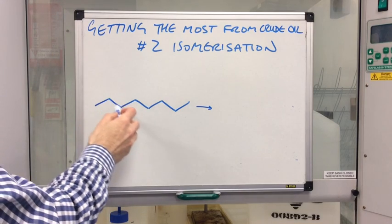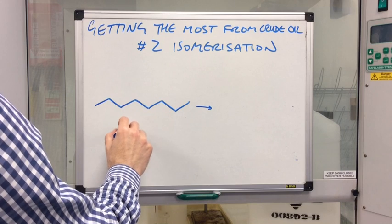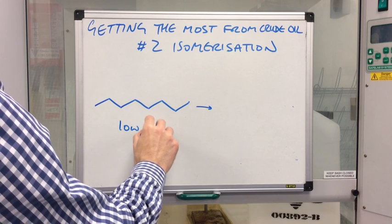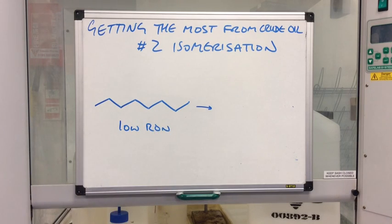So remember, straight chain alkanes, these have low RON values. So they aren't going to combust very efficiently. They're basically going to combust too soon in the compression cycle.